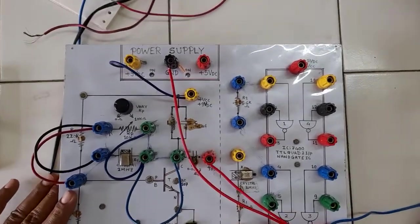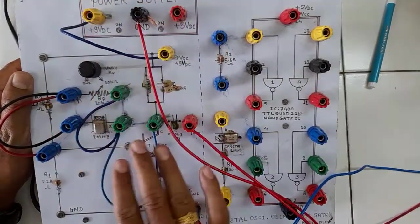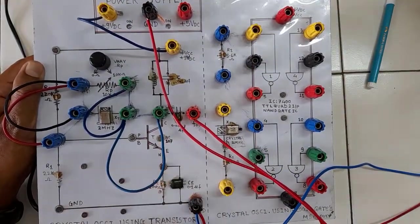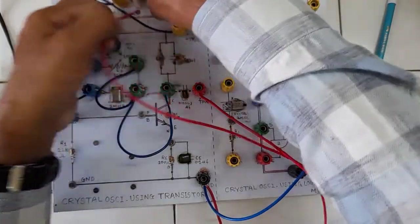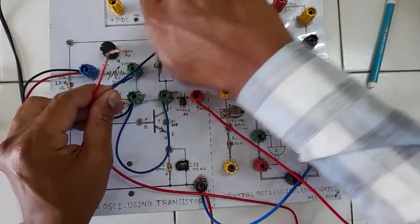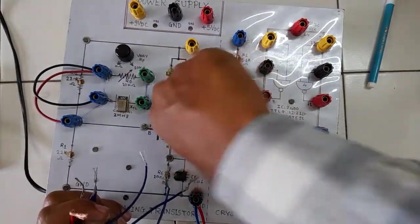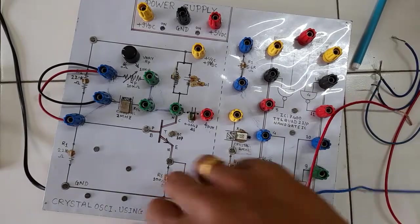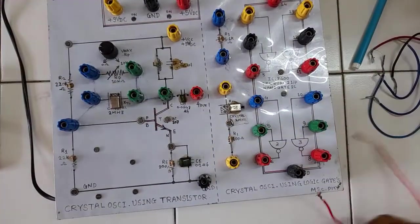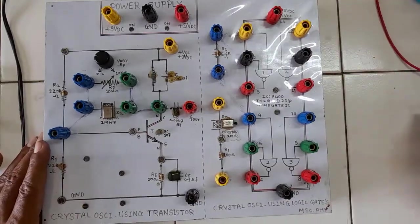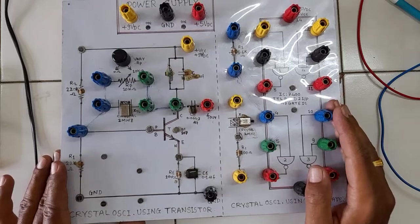Here is the actual circuit for the crystal oscillator. The power supply is there, and the circuit for the transistor crystal oscillator is shown. The output of all circuits is taken on the CRO — that is a cathode ray oscilloscope. This is the circuitry using NAND gates, and this is the circuitry using the transistor. We will go through them one by one.